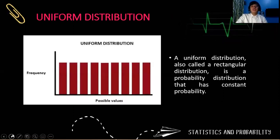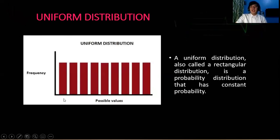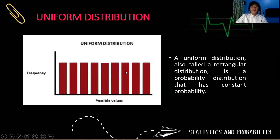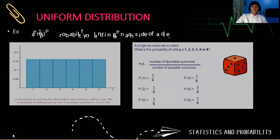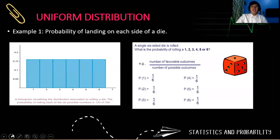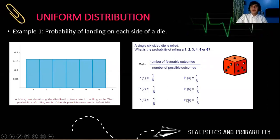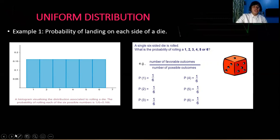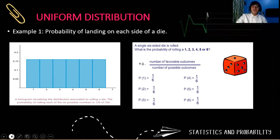For a uniform distribution, it is called a rectangular distribution in which it has constant probabilities. Every value of the random variable has equal corresponding probabilities on it. Let's have examples. Probability of landing on each side of a die. So the probability of 1 is 1 over 6, the probability of getting 2 is 1 over 6, and so on, up to the probability of getting 6 is also 1 over 6. So when you form the histogram, the histogram will look like this, and that is what you call a uniform distribution.